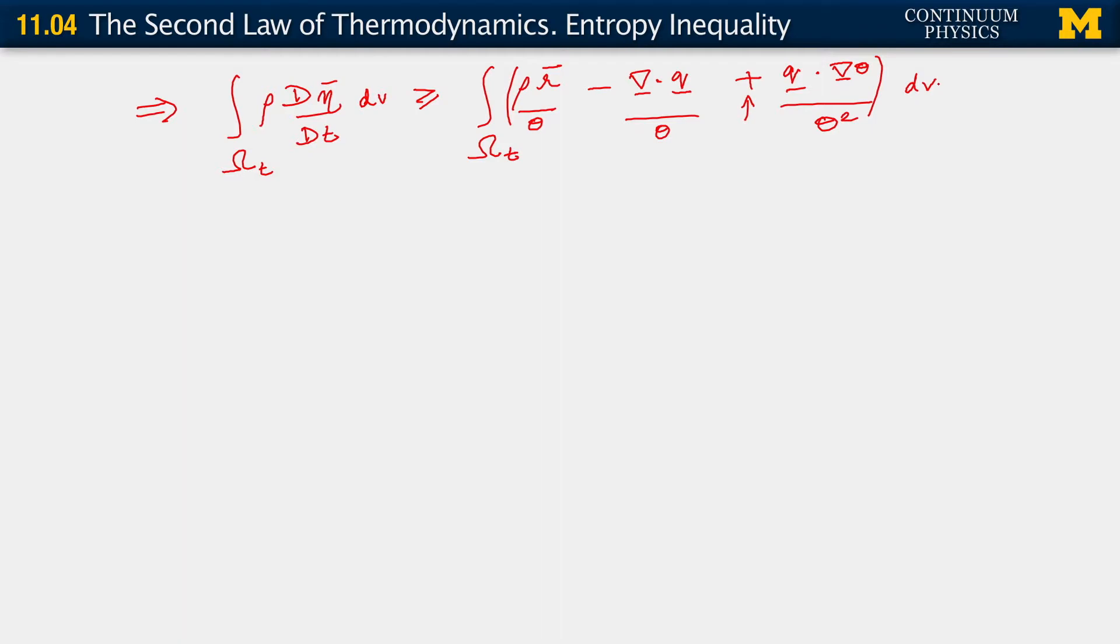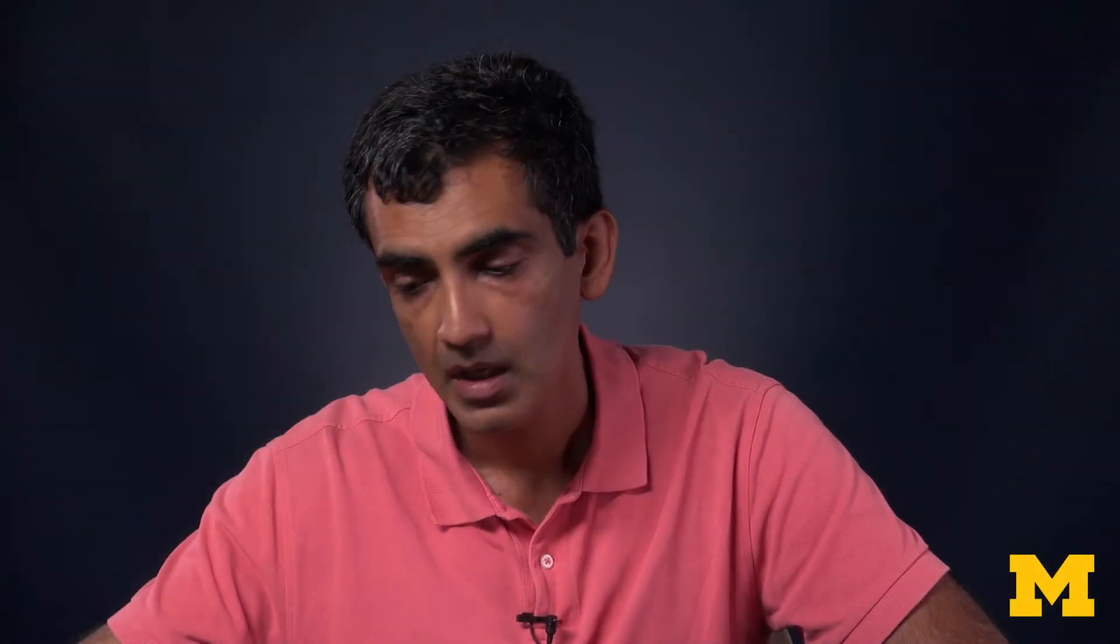So this then is our entropy inequality of the second law in integral form. As before, now, we need to make a statement here in order to go to a local form.